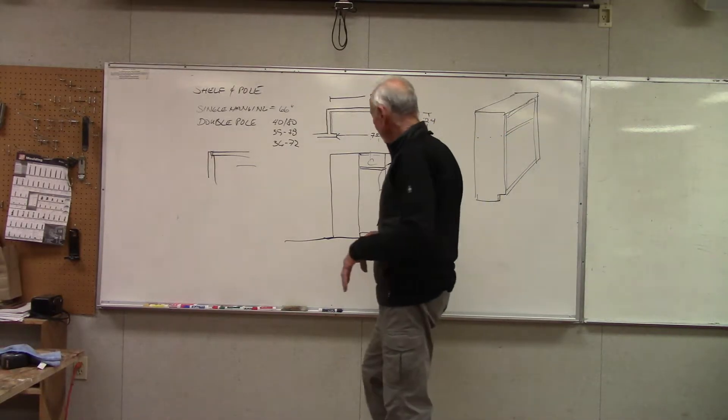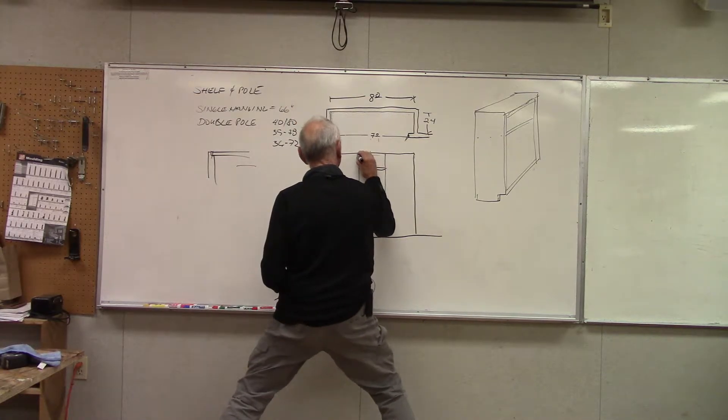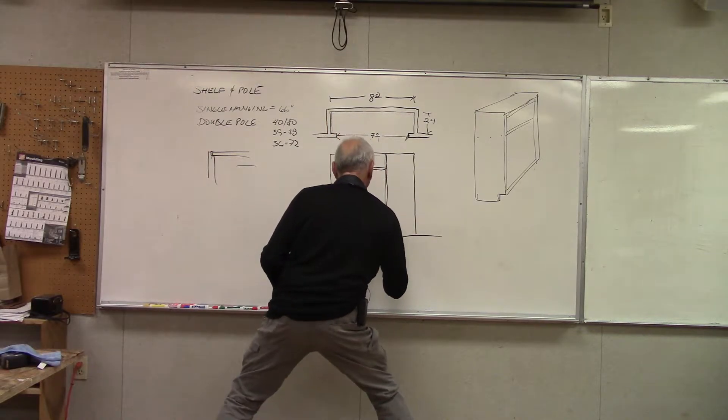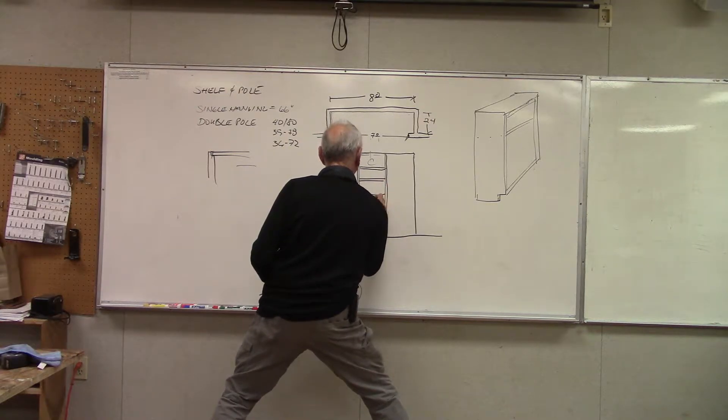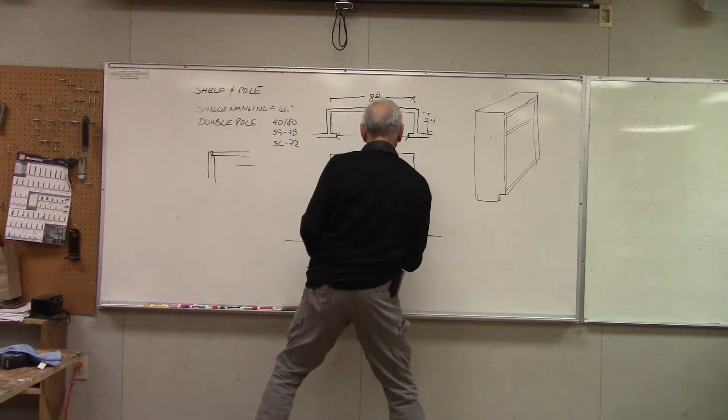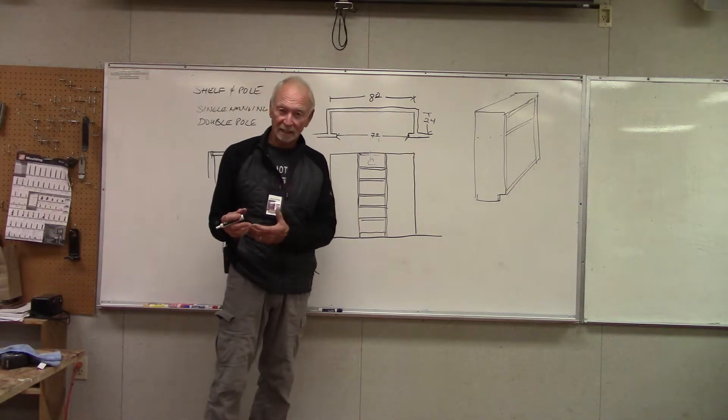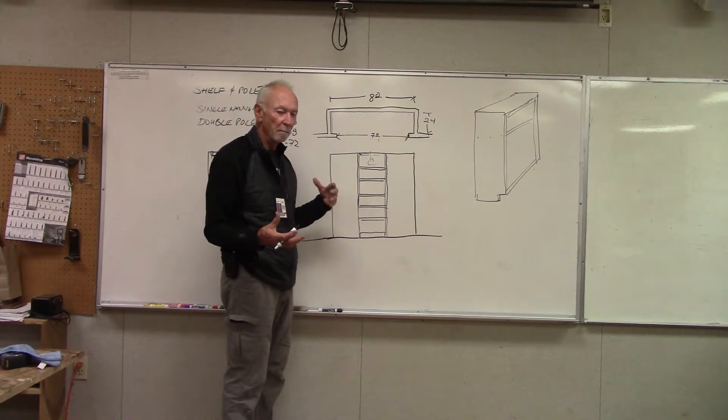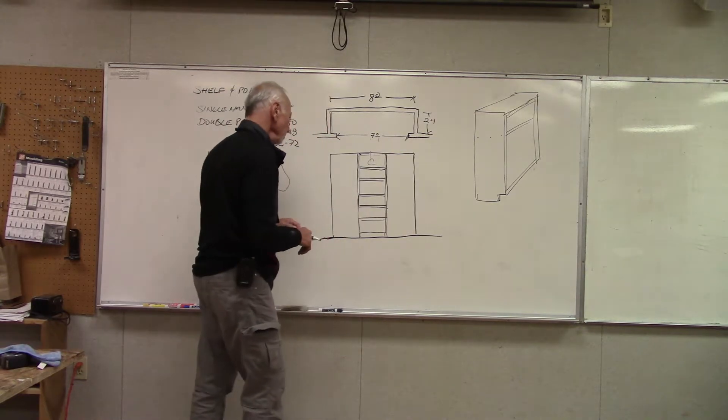So whether you do this adjustable or fixed, it doesn't really matter. You're going to have a cabinet in there with three-quarter sides. It just depends on how jazzy you want to get and what tooling is available to you. If you have no tooling or minimal tooling, then you probably want to just build this butt and nail everything and glue it. And do it in MDF. You can paint it out.